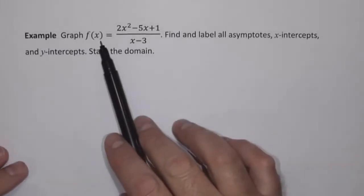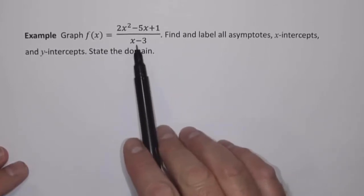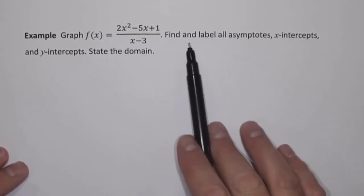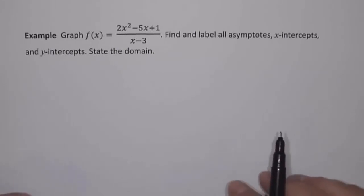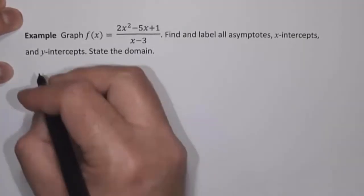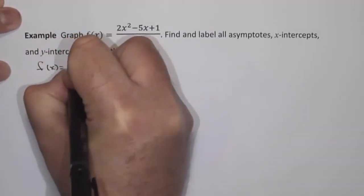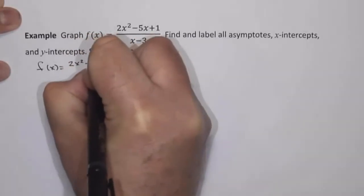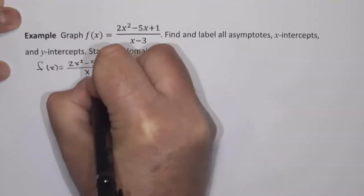In this example, we want to graph f of x equals 2x squared minus 5x plus 1 over x minus 3. We want to find and label all asymptotes, x-intercepts and y-intercepts, and we want to state the domain. So we're going to follow our process for graphing rational functions. Let's begin by rewriting our function: f of x equals 2x squared minus 5x plus 1 over x minus 3.